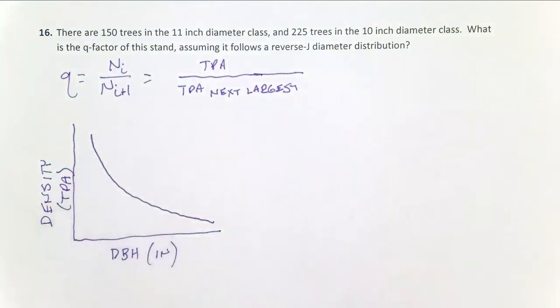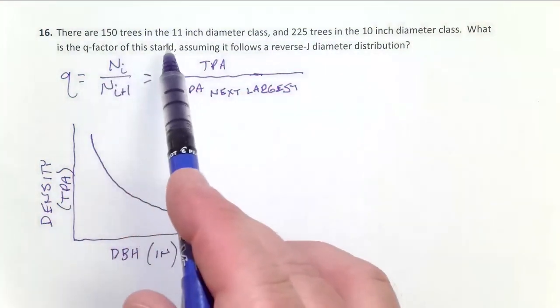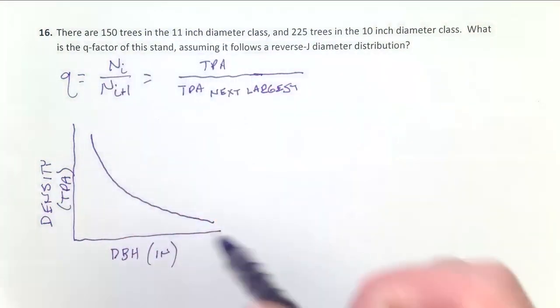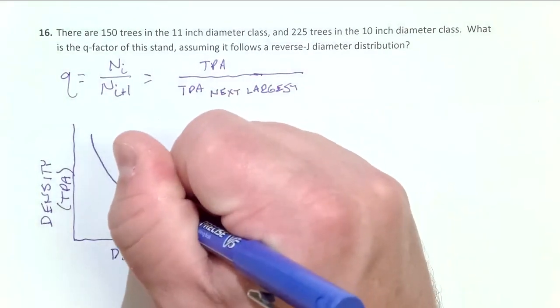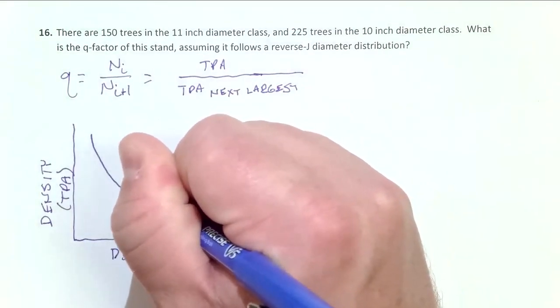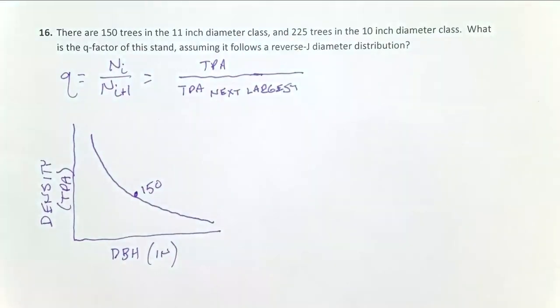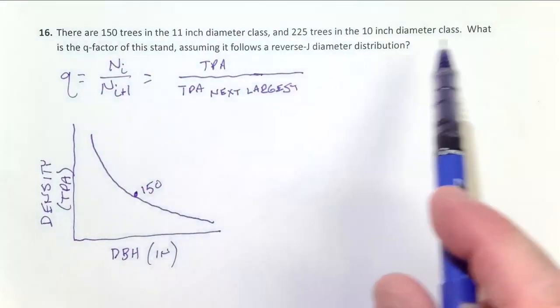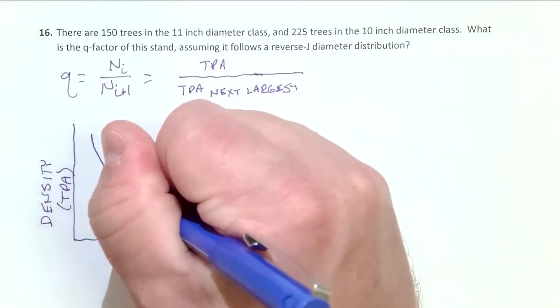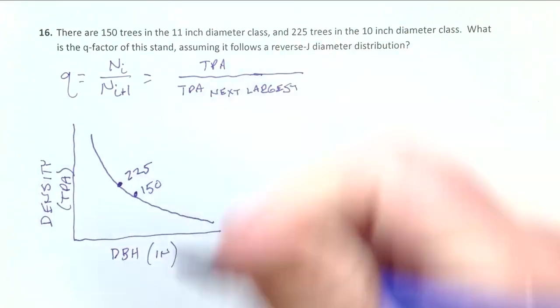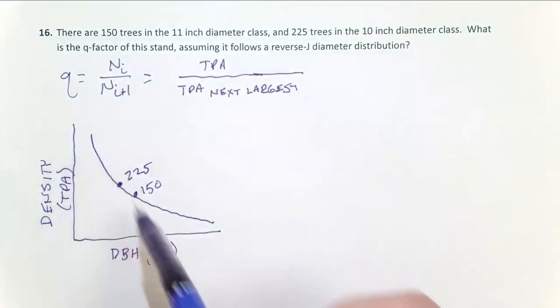And so in this scenario, I have 150 trees in the 11-inch size class. So maybe that's right here, and I define this as 150. And I have 225 trees in the 10-inch size class. So maybe that's right here, 225. I'm drawing this, but you get the idea.